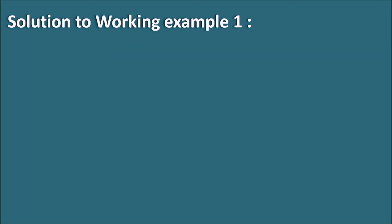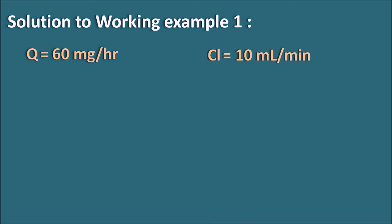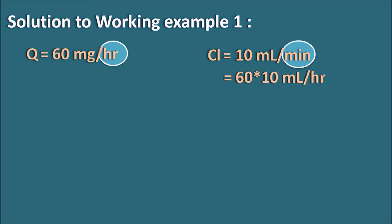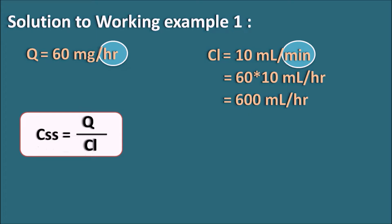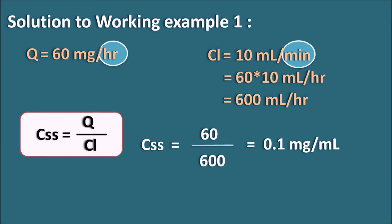Now let us calculate CSS for the given drug. Q is given as 60 mg per hour and clearance is given as 10 ml per minute. The units are different, so we convert minutes to hours: 1 hour equals 60 minutes, so 60 × 10 ml per hour = 600 ml per hour. Now both have similar units: rate of infusion is 60 mg per hour and clearance is 600 ml per hour. Applying CSS = Q / clearance: CSS = 60 / 600 = 0.1 mg per ml.